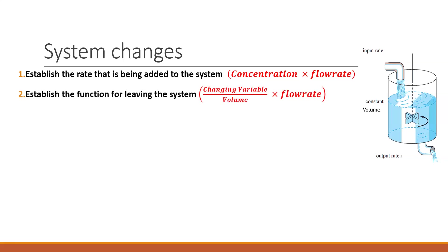Next, you want to establish some kind of a function for what's leaving. That's going to correspond to what's inside of this tank. You've got a known volume — that'll be given to you — and you've got some concentration that is constantly changing. What's going on in this tank is in a constant state of change, and you've got a flow rate. Since you don't know the exact amount of anything in the tank, you're going to have to write it up as a function.